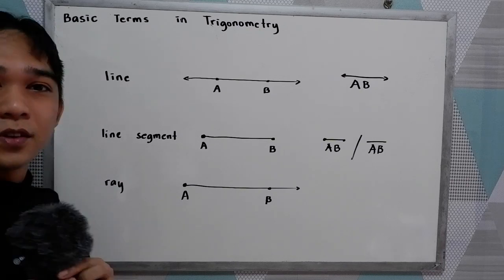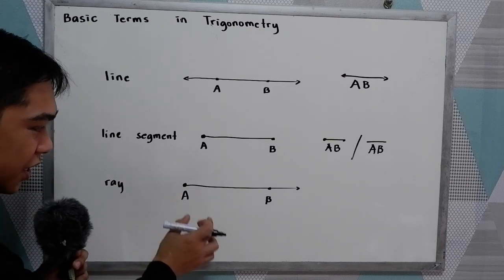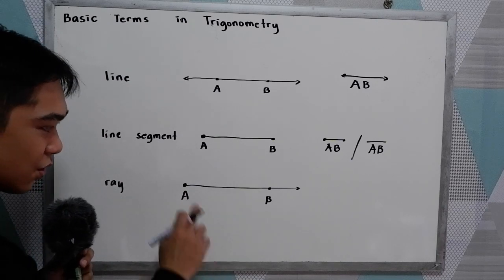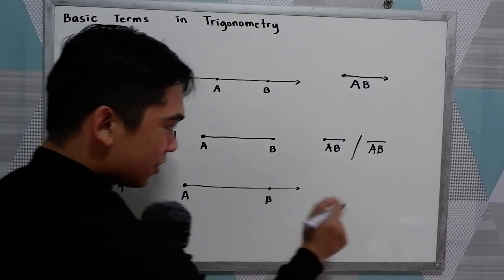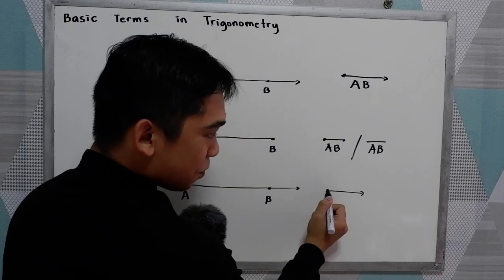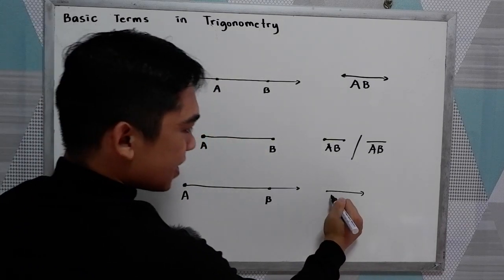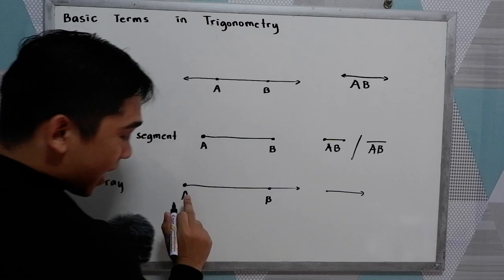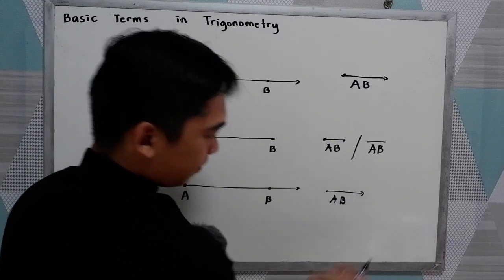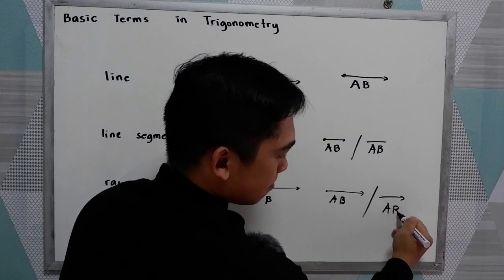Another one is the ray. We have two points here — let's say again A and B. So we have a symbol for that: endpoint, then ray, then write the two points AB. Or simply ray AB.